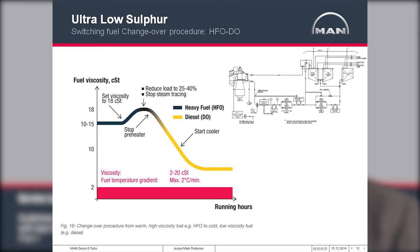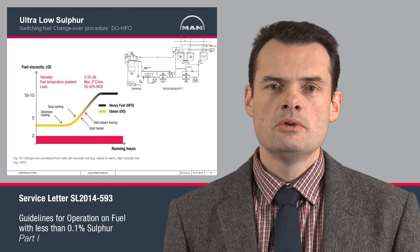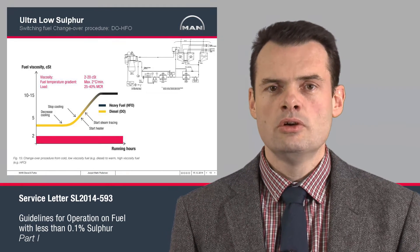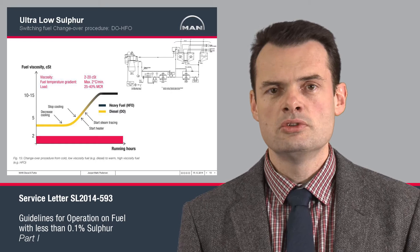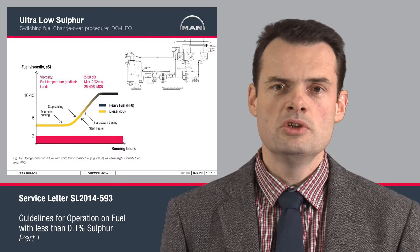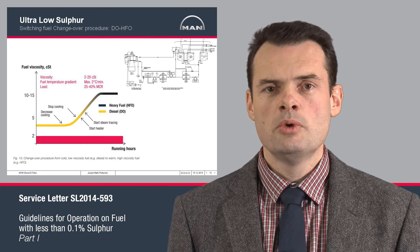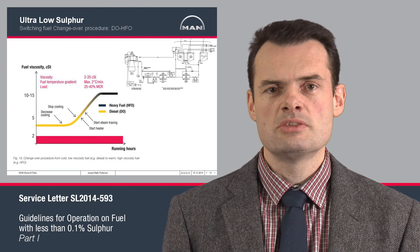When switching from a hot fuel to a cold fuel, the bound heat in the fuel system will impact the viscosity very quickly. It is therefore key to make sure that the amount of distillate fed into the system is not too high. When switching from a cold fuel to a hot fuel, or a low viscosity fuel to a high viscosity fuel such as HFO heavy fuel, it is more important to keep an eye on the temperature expansion.